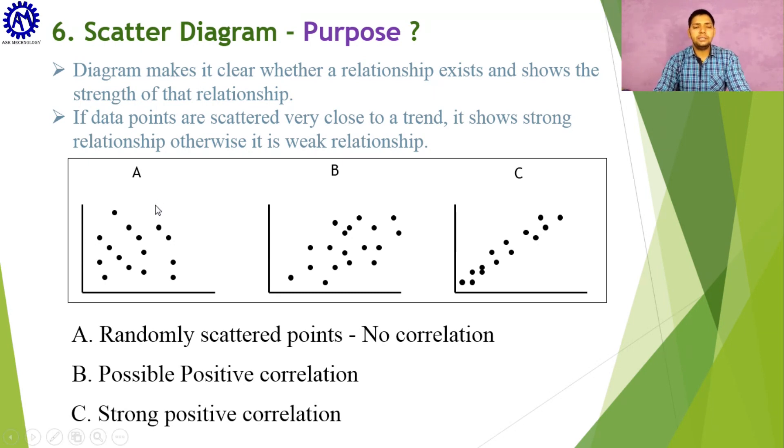You can see different types of scatter diagrams are mentioned here: A, B, and C. In case A, there is no correlation between variables. In case B, there might be a possible positive correlation. In case C, there is a strong positive correlation between variables. The main purpose of scatter diagram is to show correlation between two variables and how their trend goes.